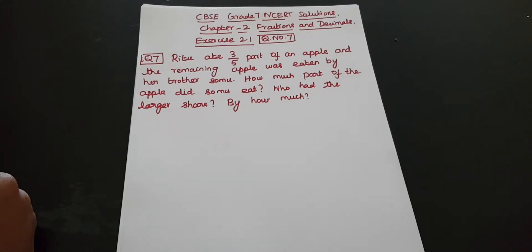Good morning students. CBC grade 7, NCRT solutions, chapter number 2, fractions and decimals, exercise 2.1, question number 7.